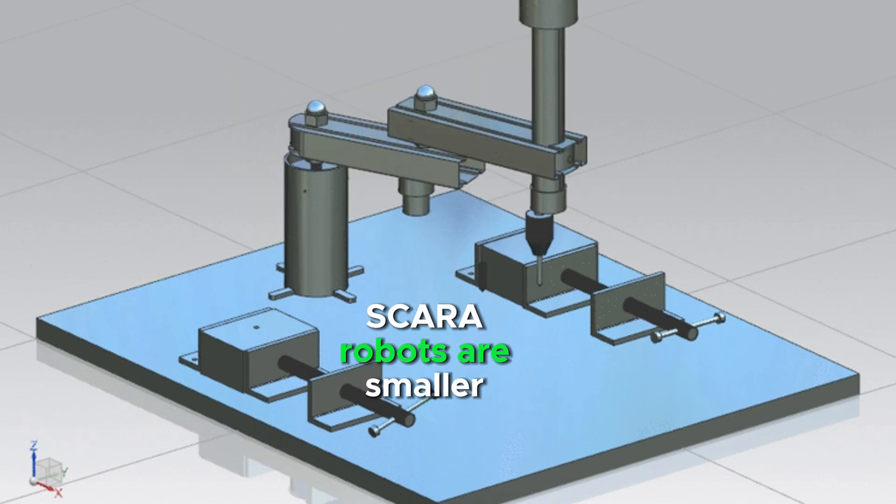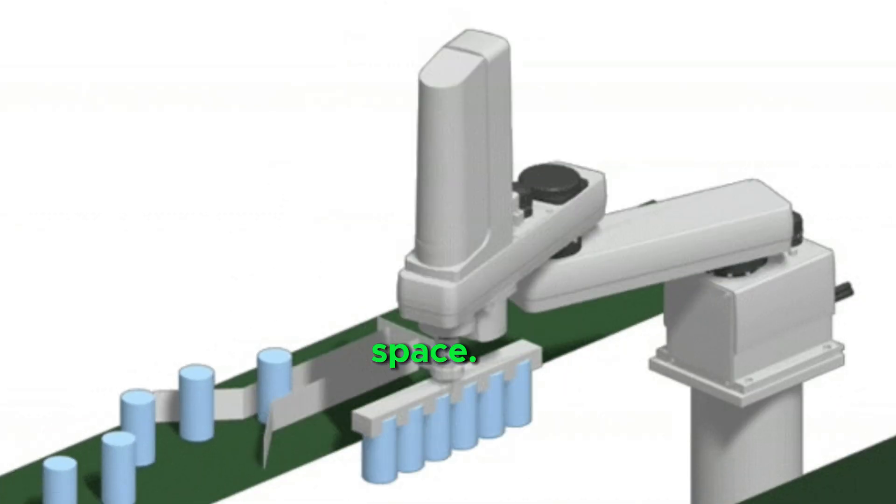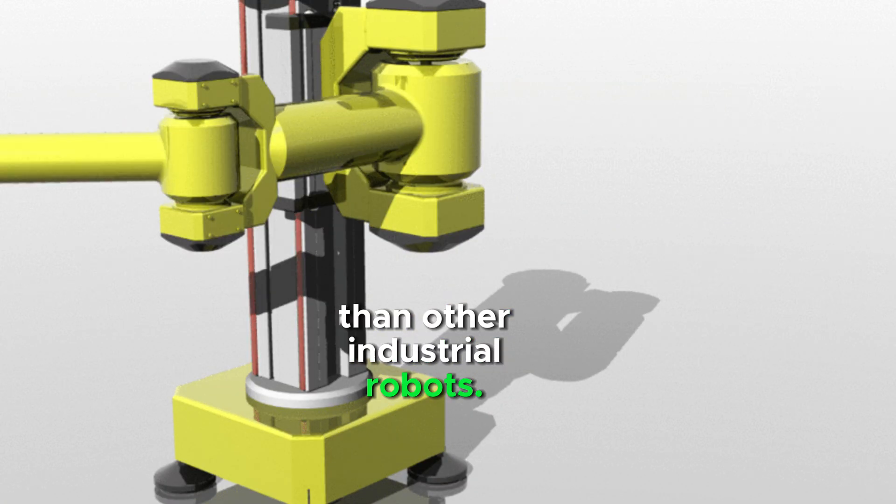SCARA robots are smaller than other industrial robots, saving valuable floor space. They are less expensive to purchase and maintain than other industrial robots.